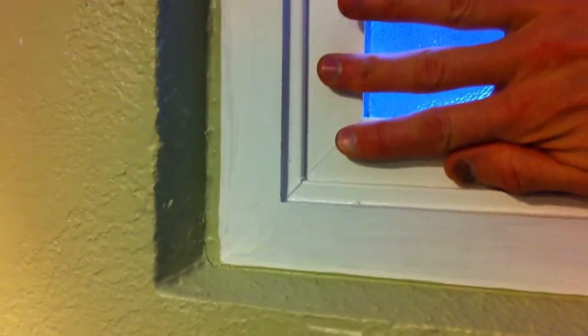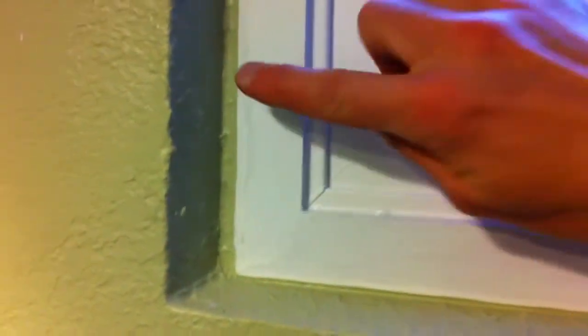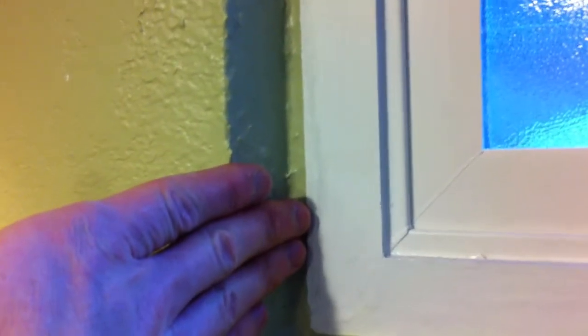I spray foamed all around it with window and door spray foam all through here. And then I taped off right along here where I thought the window met up against this slanted edge here.